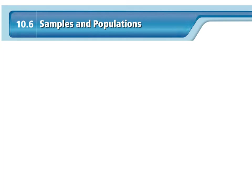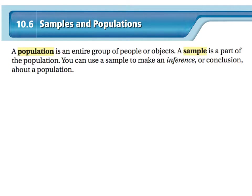In section 10.6, we're going to talk about samples and populations. A population is an entire group of people or objects. A sample is a part of the population. You can use a sample to make an inference or conclusion about a population.